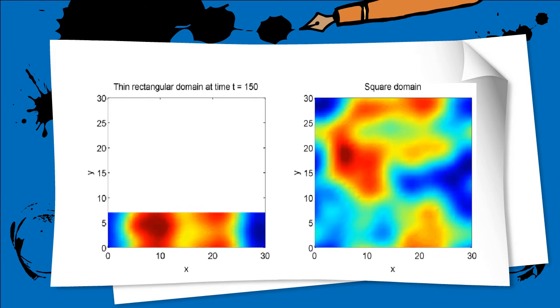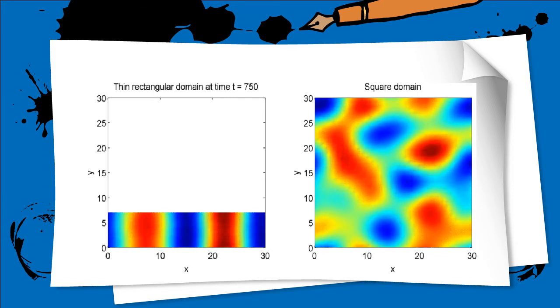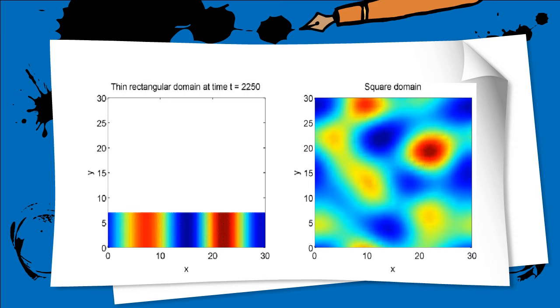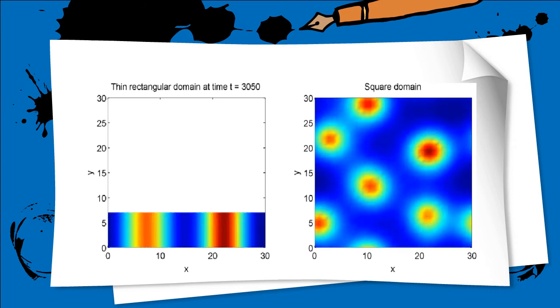This becomes more interesting when we extend the model to a two-dimensional system. This time, we can vary the size of the domain on two directions. In the MATLAB simulation shown, all of the parameters are kept the same except for the size of the domain. The long thin domain at the left develops stripes, whereas the square domain at the right gets dots.